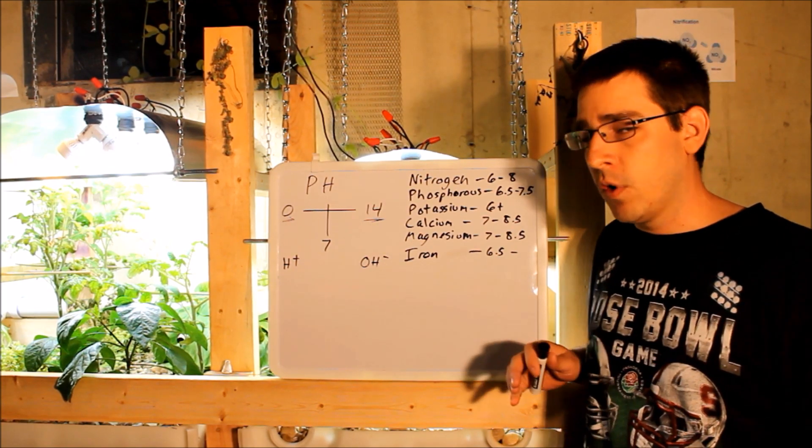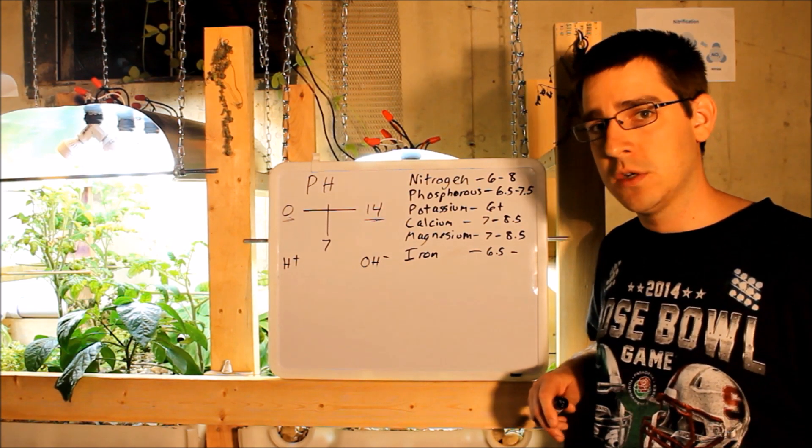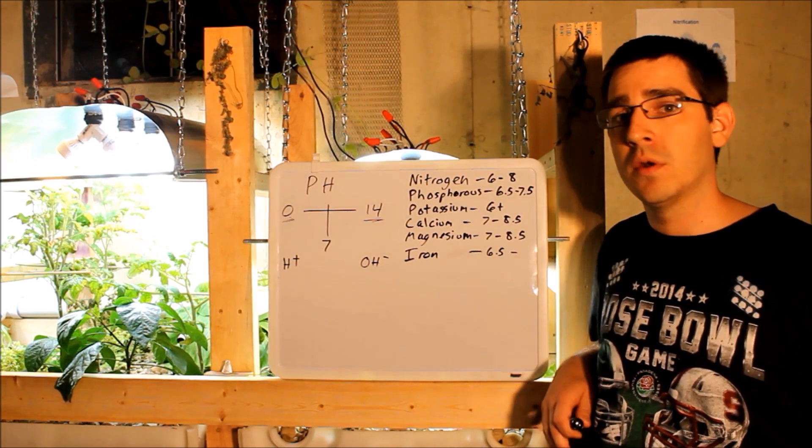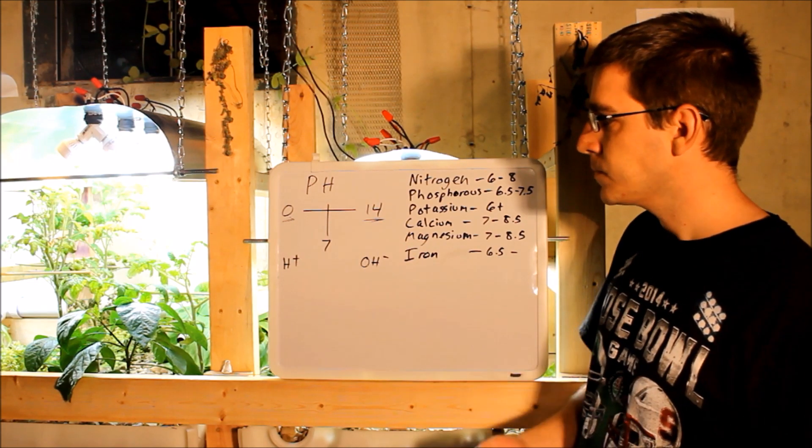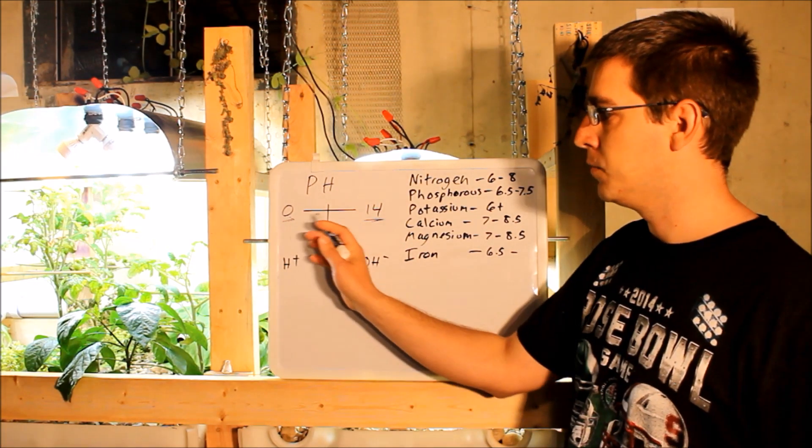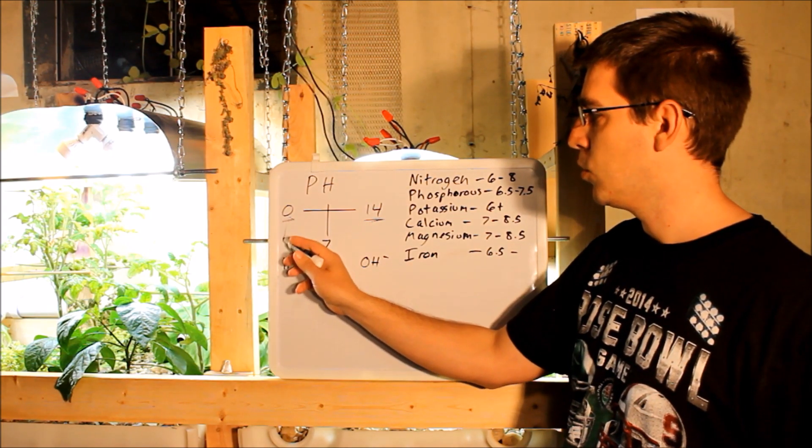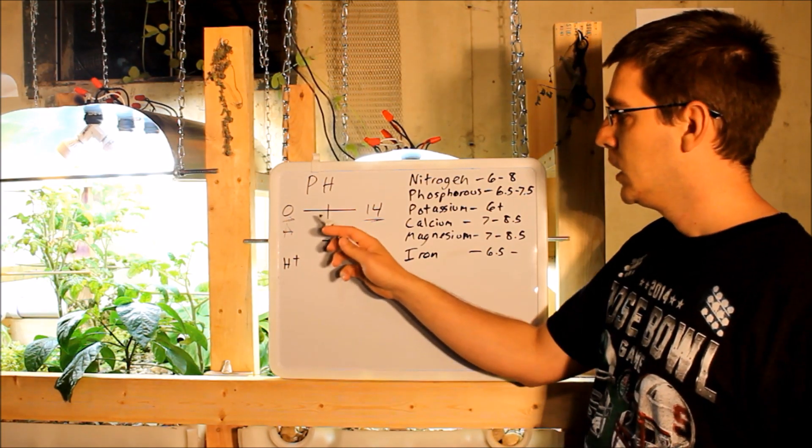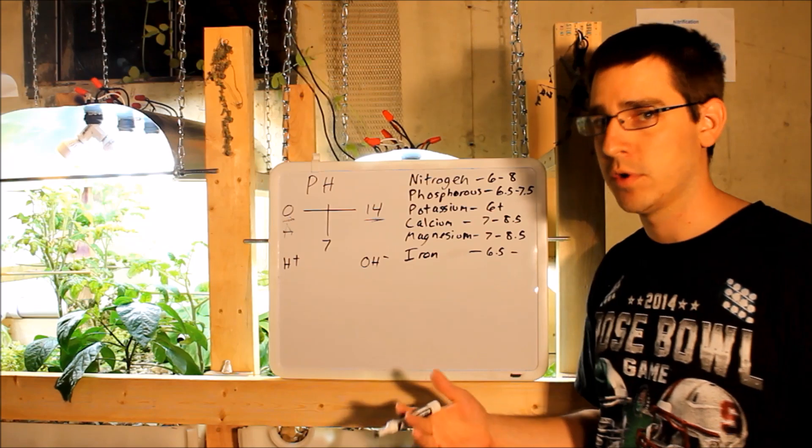So first of all, what is pH? pH is a measurement of acidity, essentially, whether a solution is more acidic or whether it's more basic or alkaline. The pH scale ranges from 0 to 14. Things that have a pH closer to 0 are more acidic. So down here you've got your more acidic solutions, battery acid, things like that. And then up towards 14, you have things that are more basic, lime or something like that.